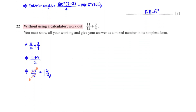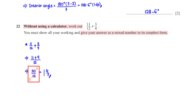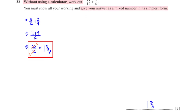Without using a calculator, work out 11 over 12 plus 3 over 4. You must show all your working and give your answer as a mixed number in its simplest form. The LCM of 12 and 4 is 12. For 11 over 12, since we multiply 12 by 1 to get the LCM, we also need to multiply 11 by 1, giving us 11. For 3 over 4, since we multiply 4 by 3 to get the LCM, we also need to multiply 3 by 3, giving us 9. 11 plus 9 is 20. So we get 20 over 12, which simplifies to 5 over 3. Since 5 over 3 is an improper fraction, we convert it to a mixed number: 3 goes into 5 one time with a remainder of 2, giving us 1 and 2 over 3.